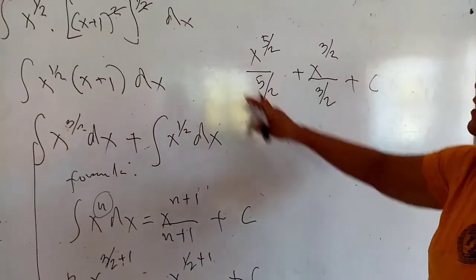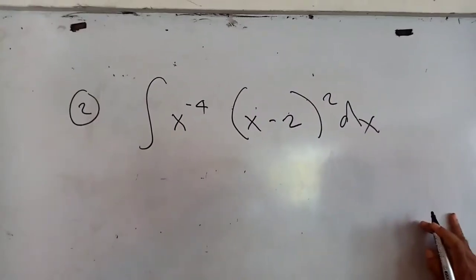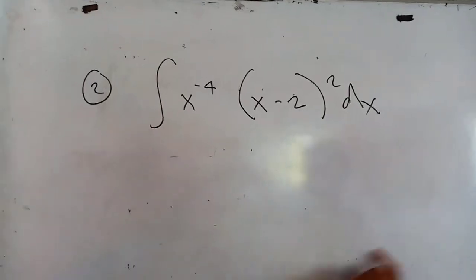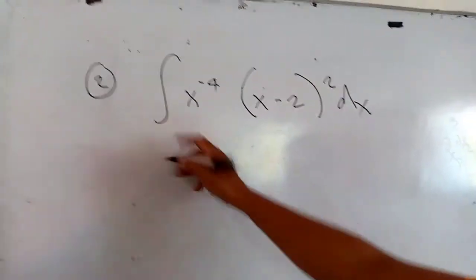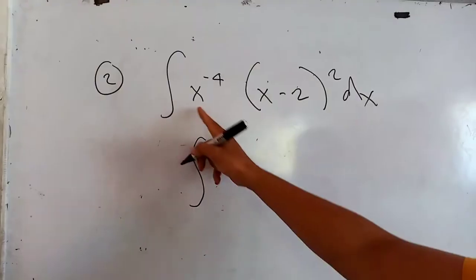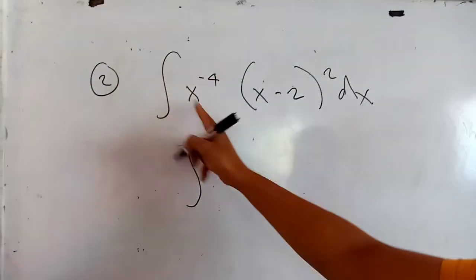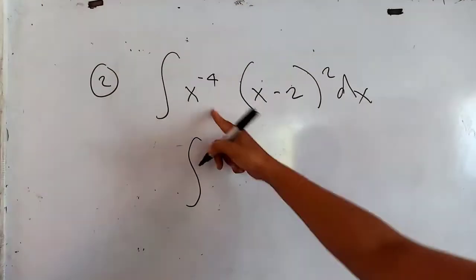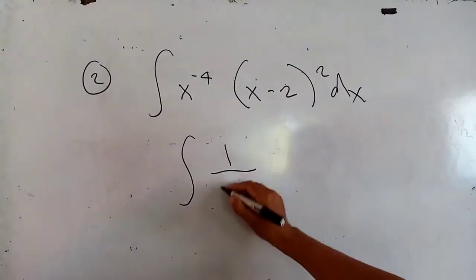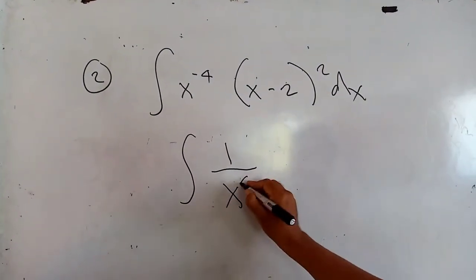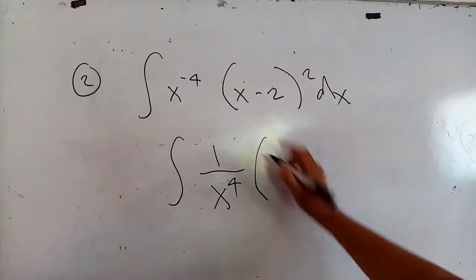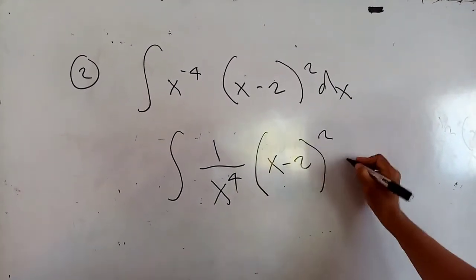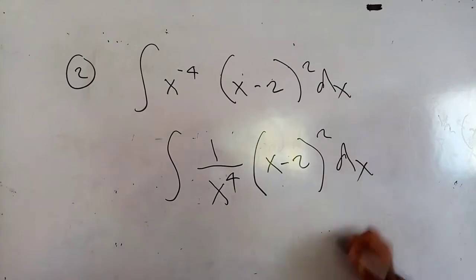Note that this is the divisional practice; we proceed to problem number 2. Still with the sign of integration, you are given a negative exponent; I have to bring it down according to algebra. That is 1 over x to the 4th power, multiplied by (x minus 2) squared times dx.